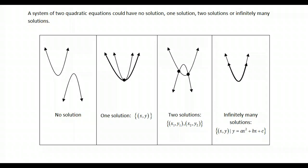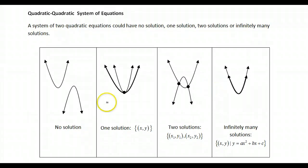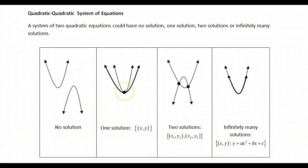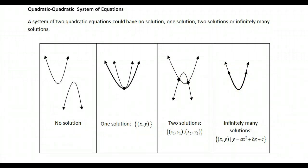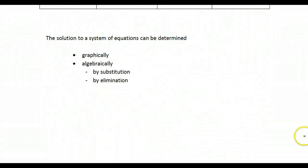Quadratic-quadratic systems of equations: a system of two quadratic equations could have no solution — one opening up and one opening down with no intersection between the two; one solution where they share a common point; two solutions where they cross each other; or infinitely many solutions where one quadratic is on top of the other — basically the same parabola.